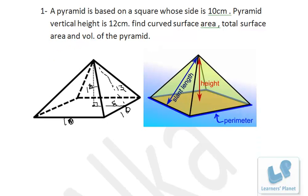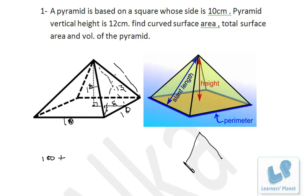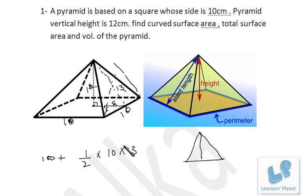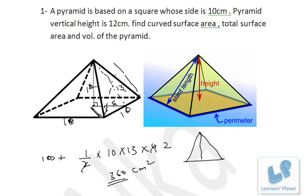The base area will be 10 × 10 = 100. There are 4 triangles, each with base 10 and slant height 13 as the altitude. The area of each triangle is half of base times altitude: ½ × 10 × 13 = 65. Multiplied by 4 triangles gives 260. So total surface area = 260 + 100 = 360 cm².